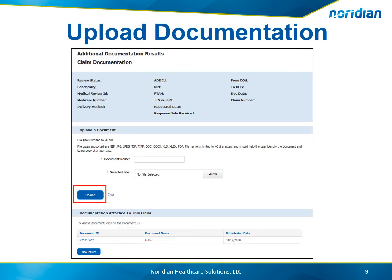To upload supporting documentation, enter a recognizable document name. Browse on your computer for the file containing the documentation. Please note that the file size of each upload is 70 megabytes, and the file types that are accepted are listed on the screen. Then choose Upload. The documentation will now display under the documentation attached to this claim table. Any additional documentation can be uploaded following the same process.